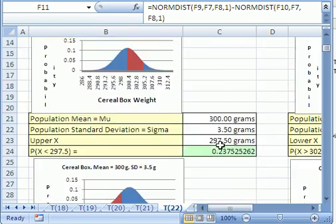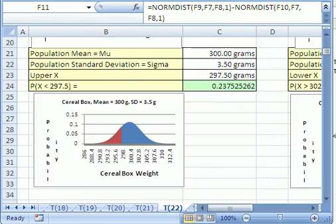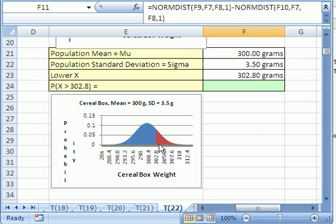Let's do one last one. We did between two and then we did below. Now let's do the above. If you want to find the probability that a box of cereal weighs more than 302.8 grams. Since all the area is 1, if we calculate this area right here, which is from 0 up to our X and subtract it from 1, we'll get the upper end.